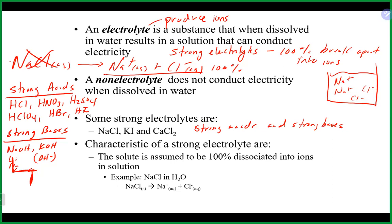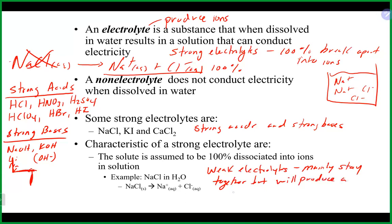Any of those strong acids or strong bases, along with ionic compounds, will completely break apart from one another when in solution — you pretty much have nothing but ions floating around. There are also weak electrolytes, which mainly stay together but will produce a few ions. Since they produce some ions they're considered electrolytes, but definitely weak ones — not anywhere near the amount of ions a strong electrolyte will produce.